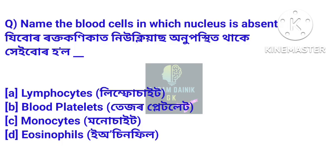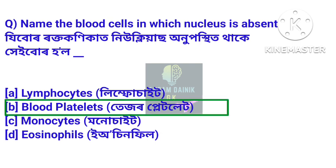Name the blood cells in which nucleus is absent — zivur roktokonikat nucleasor unupostit thakke. Answer: blood platelets. Zivur roktokonikat nucleus unupostit thakke, heburot tether platelet buli kwa hoi.